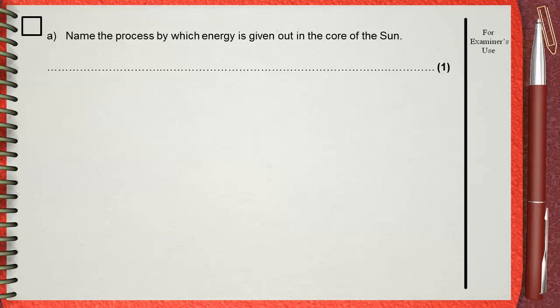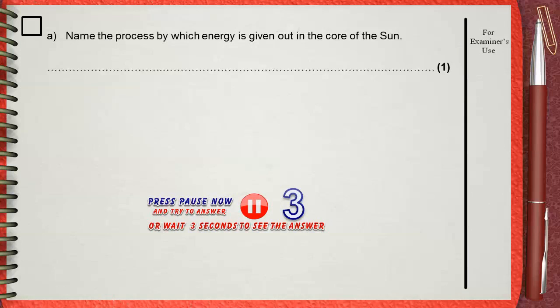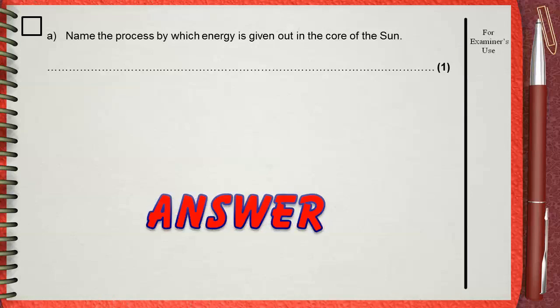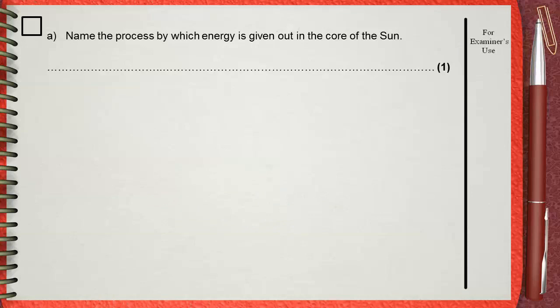Name the process by which energy is given out in the core of the Sun. The process or the reaction by which energy is given out in the core of the Sun is named nuclear fusion.